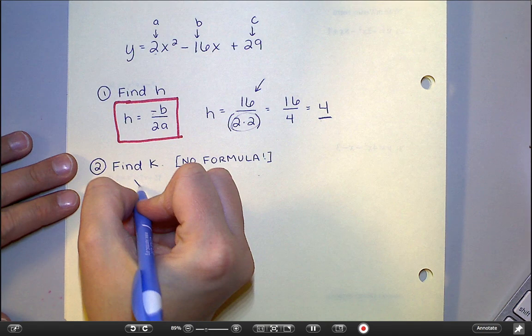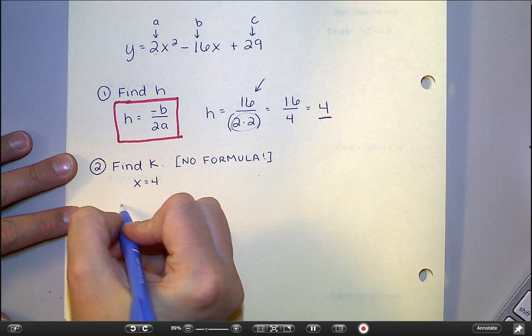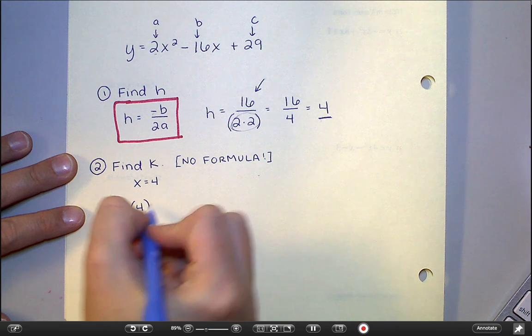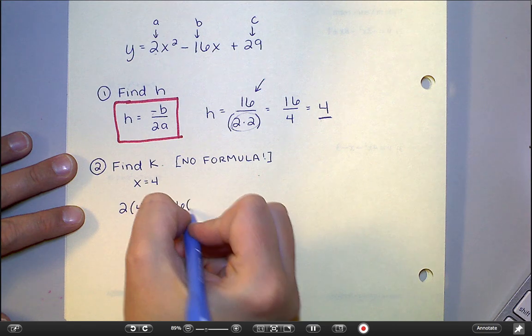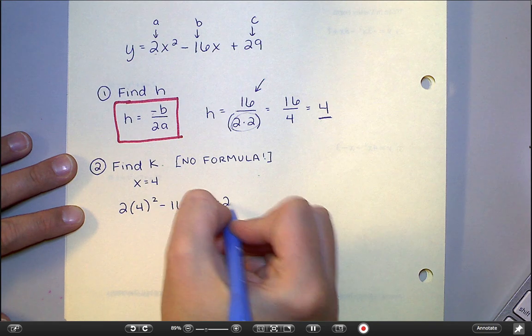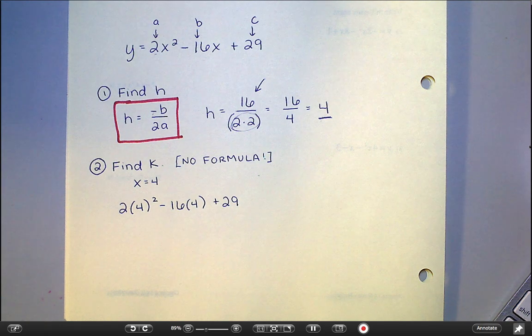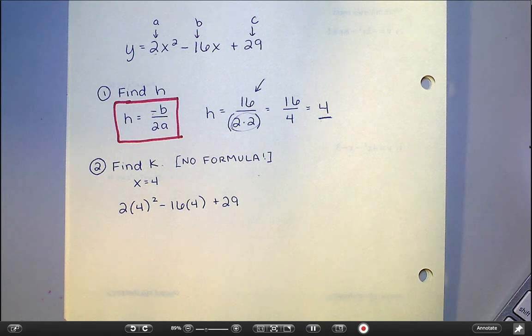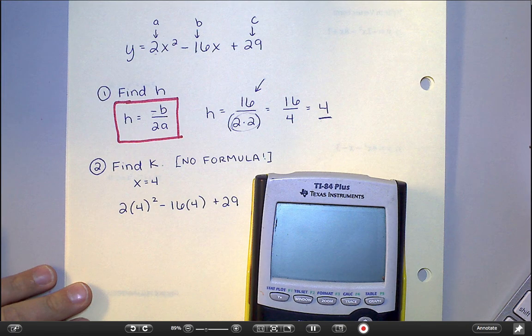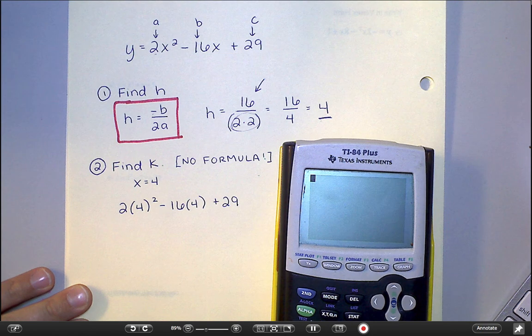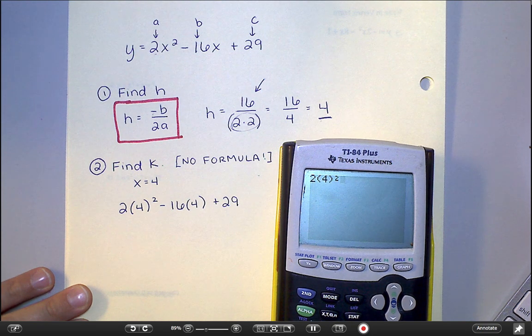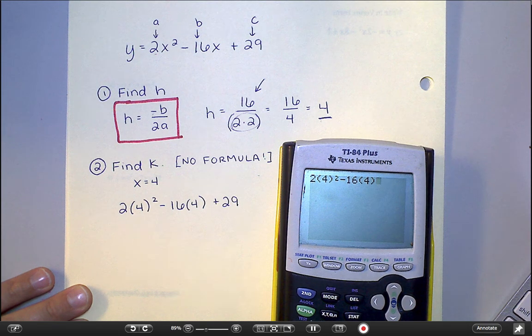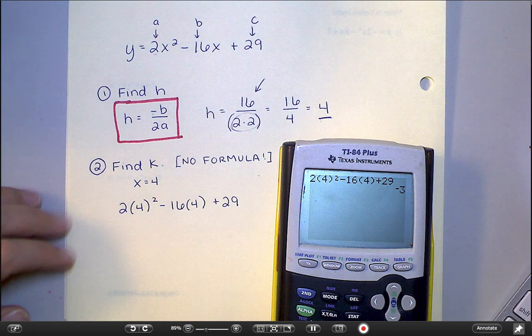So what I am really doing here is putting my x equal to 4. And so I'm going to go 2 times 4 squared minus 16 times 4 plus 29. And it is going to be important here that you put everything. So anytime I'm dropping a number into the equation, see how I'm putting it in parentheses? That's what you want to make sure you're doing as well. So I would go 2 times 4 squared minus 16 times 4 plus 29. And I get a k value back of negative 3.